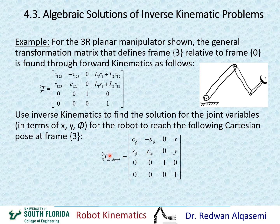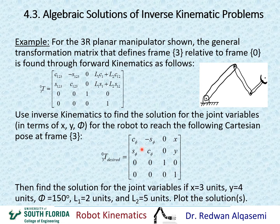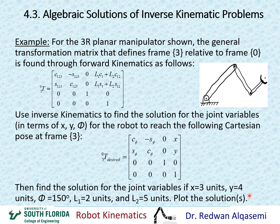We need to find theta1, theta2, and theta3 in terms of X, Y, and phi. The second portion of the question gives specific values: X equals 3, Y equals 4, and phi equals 150 degrees. We're also given L1 equals 2 units and L2 equals 5 units, and we need to plot the solution — or multiple solutions if they exist.